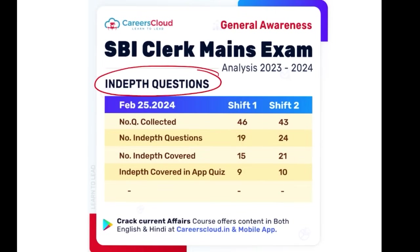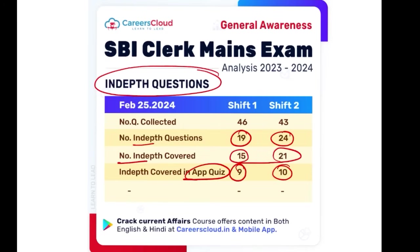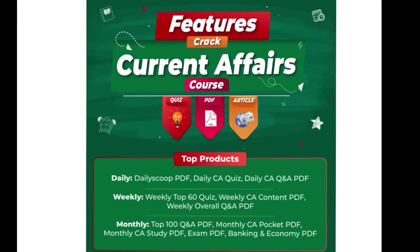That is why we say we are the one-stop solution for general awareness and current affairs. For in-depth questions, 19 and 24 questions were respectively covered, and in-depth covers were 15 and 21 respectively. On a daily basis we provide the Daily Scoop PDF, daily current affairs quiz, and Q&A PDFs. For weekly, we provide Top 60 Quiz, CA content PDF, and weekly overall Q&A PDF. For monthly, we provide Top 100 Q&A PDF, monthly current affairs pocket PDF, monthly study PDF, exam PDF, and banking and economy PDFs on our mobile application.